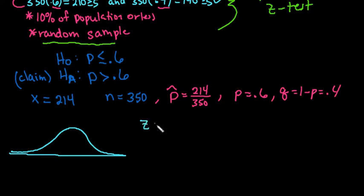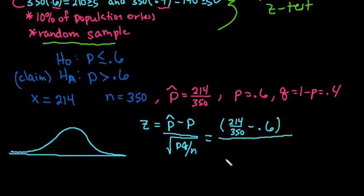So what your calculator is calculating is it's taking and plugging the values into this formula where you're taking your sample proportion minus the population proportion that's being tested and dividing it by the square root of P times Q divided by N. So if we plug in all those values, I'm just going to leave, like I said, P hat as 214 over 350 minus 0.6. And then we would divide this whole thing by 0.6 times 0.4 divided by the square root of the sample.